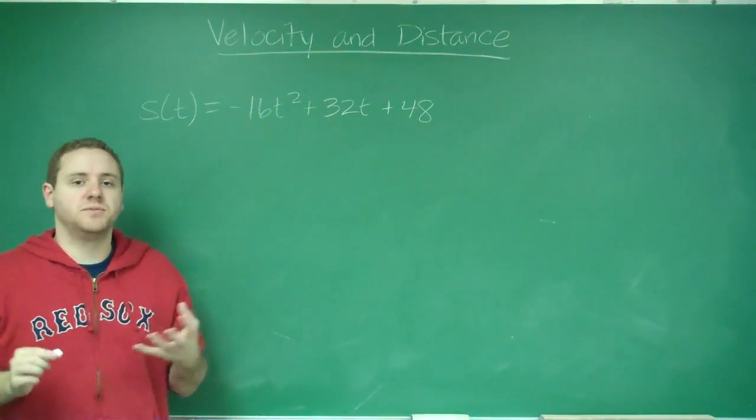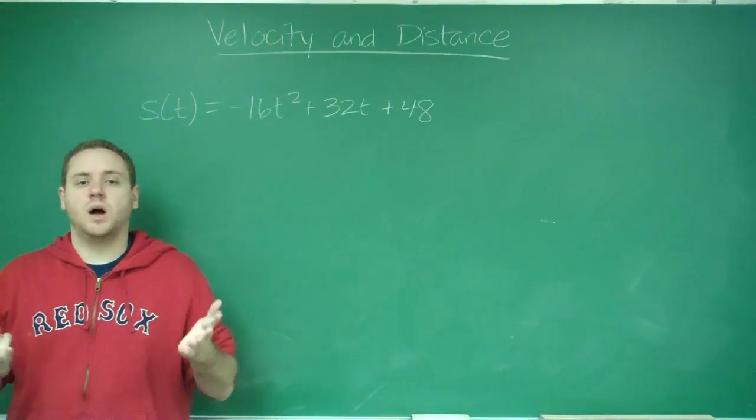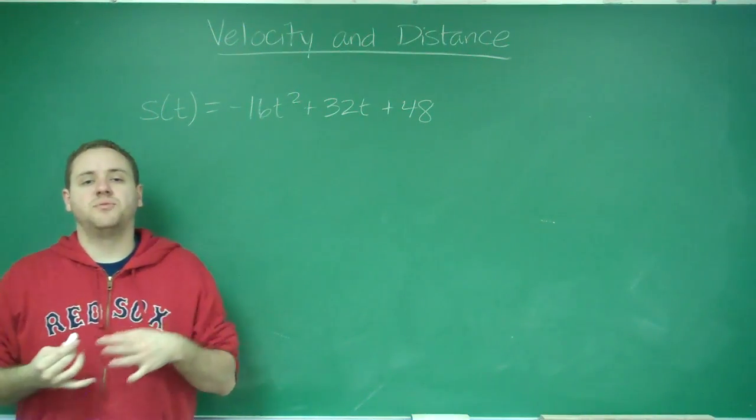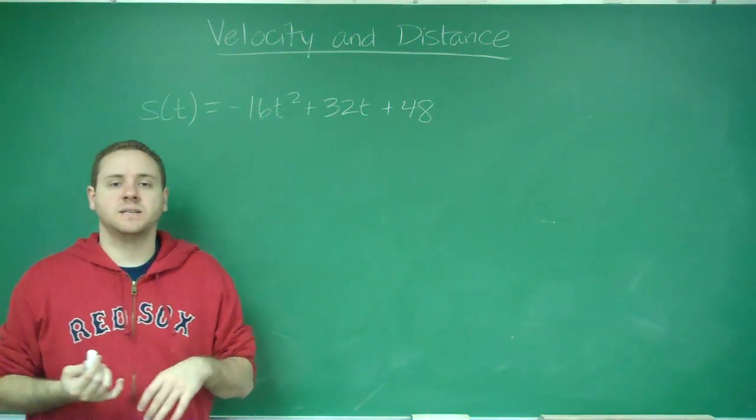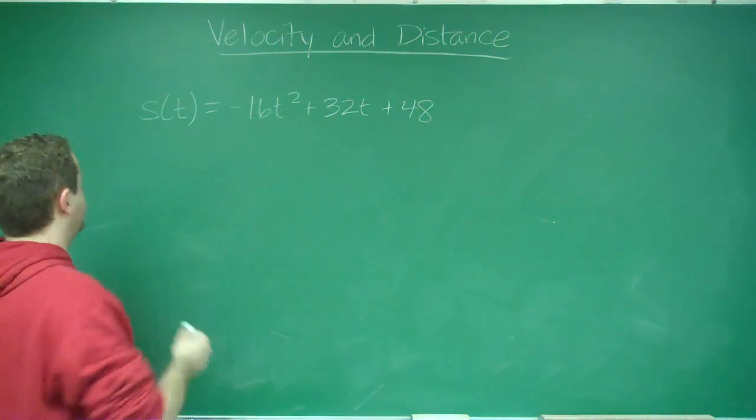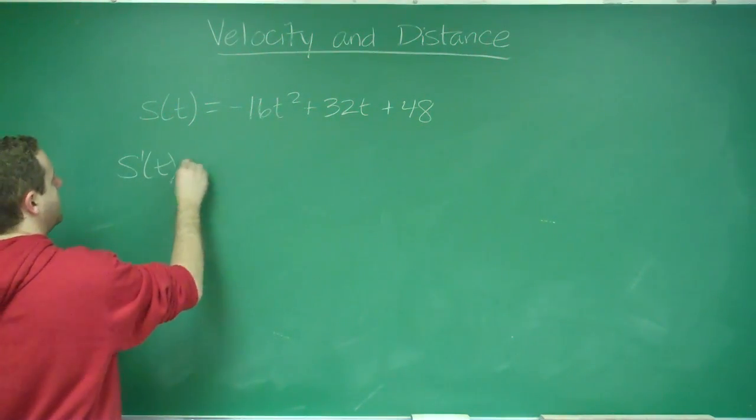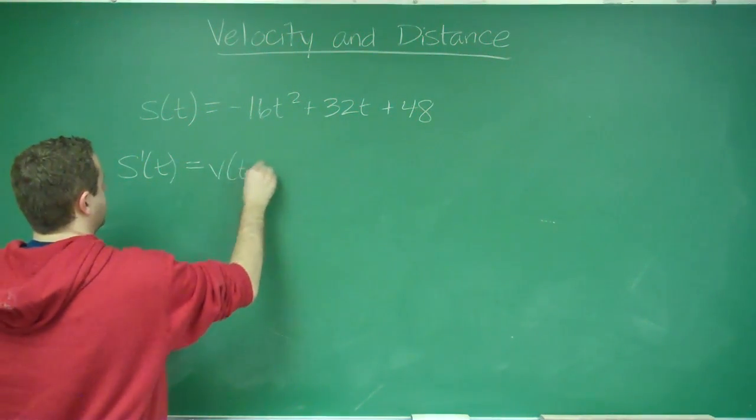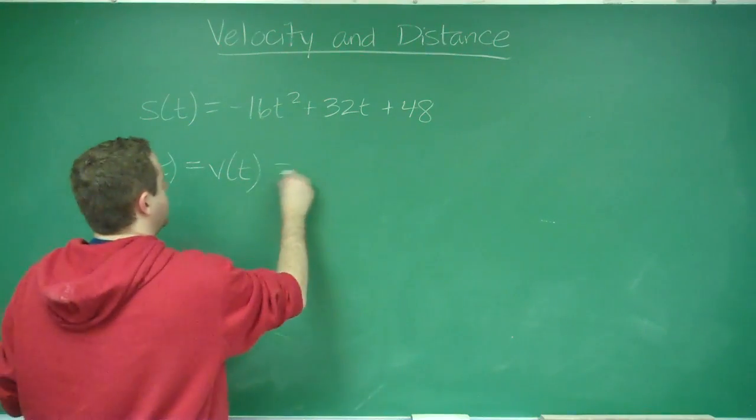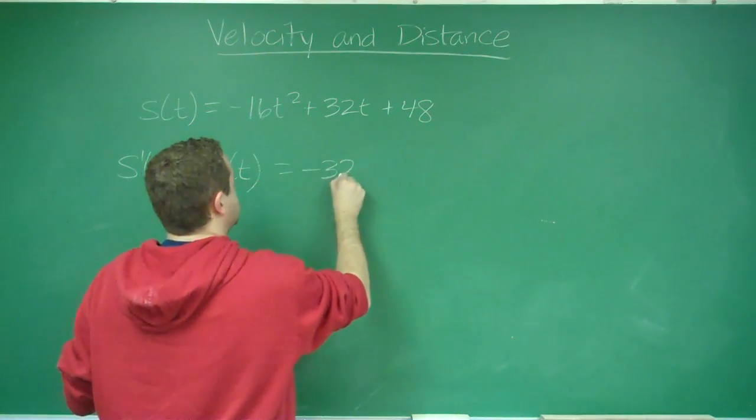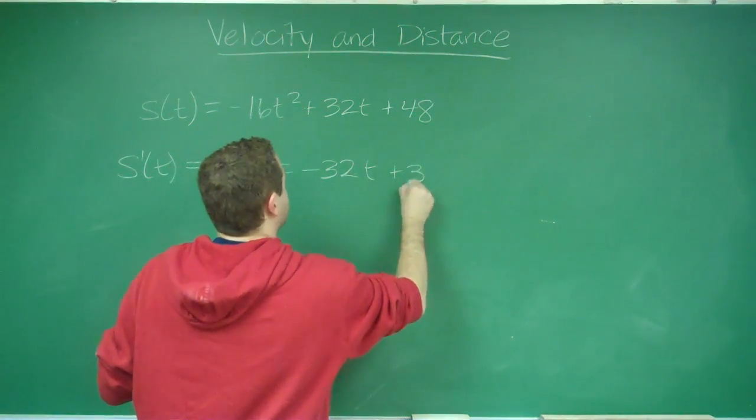And this was our position function of some object. If we wanted to find the velocity of the object at any time, we would take the derivative. So S prime of t equals V of t. And that, in this case, would be negative 32t plus 32.